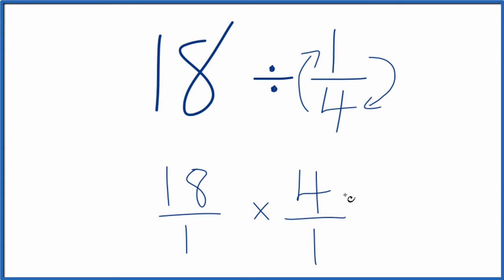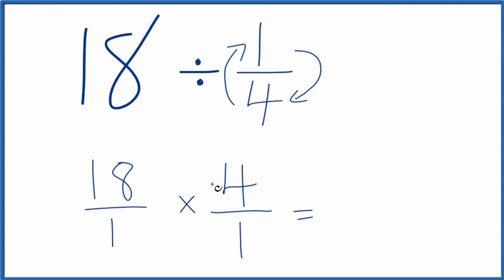Now, when we're multiplying these fractions, we multiply the numerators and then the denominators, and that'll give us our answer. So 4 times 18, that's 72. 1 times 1 is just 1.